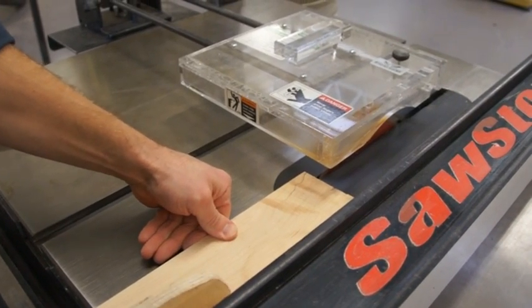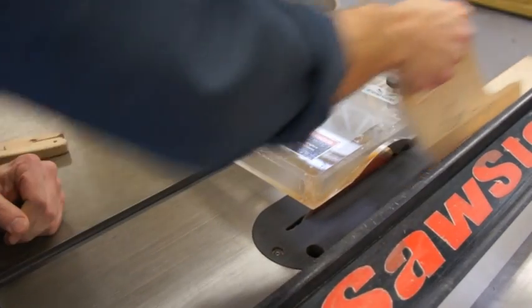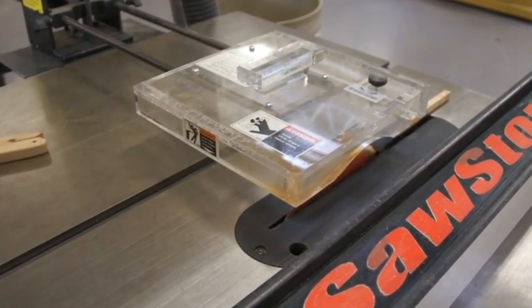To keep the board from pulling away from the fence when ripping, you must put your hand closer to the blade side and push at an angle toward the fence.